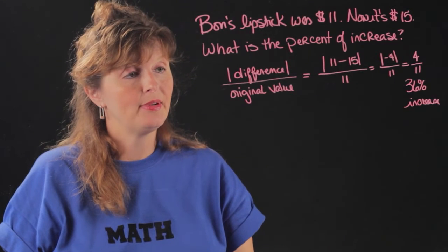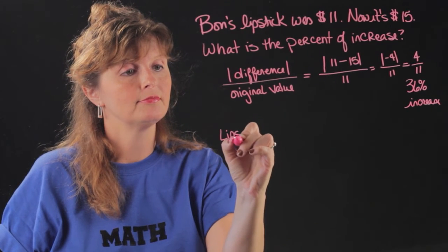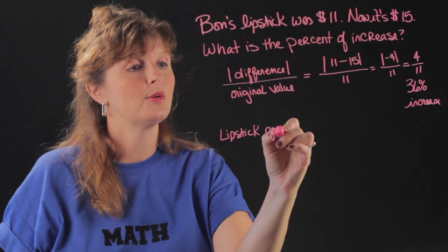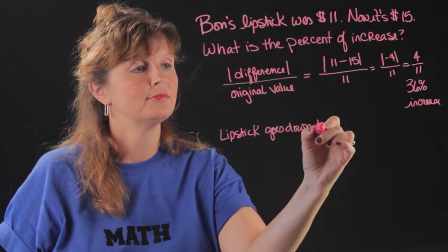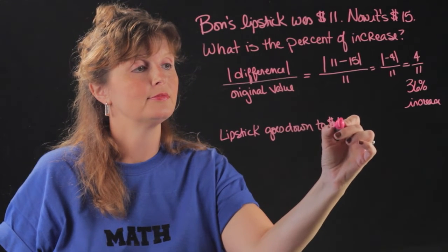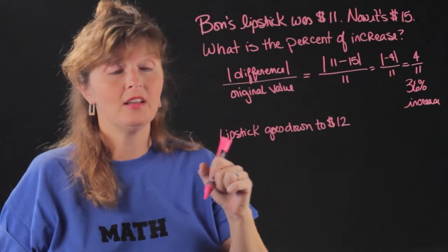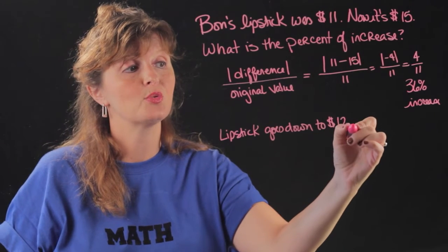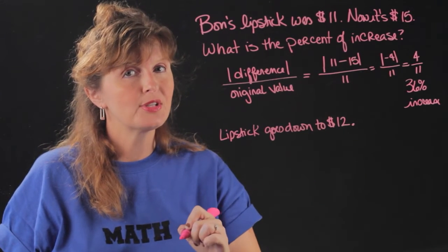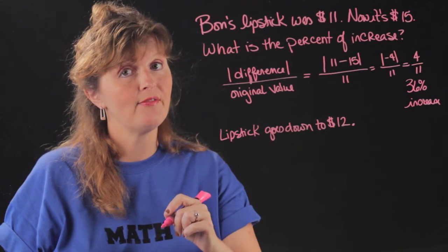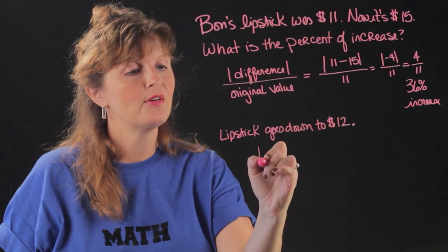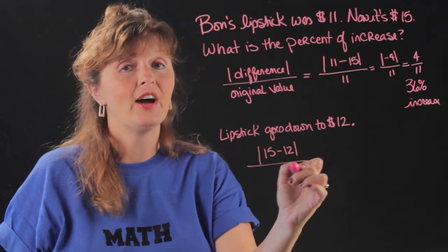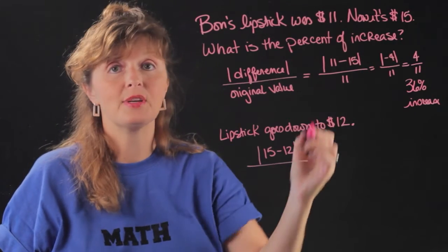Now what happens if the lipstick goes down in price? So we start at $11, then a 36% increase to $15, and now it's going to go down to $12. What's the percent decrease? We can use the same formula: absolute value of the difference, so 15 minus 12, divided by the original value, and now the original value is 15.